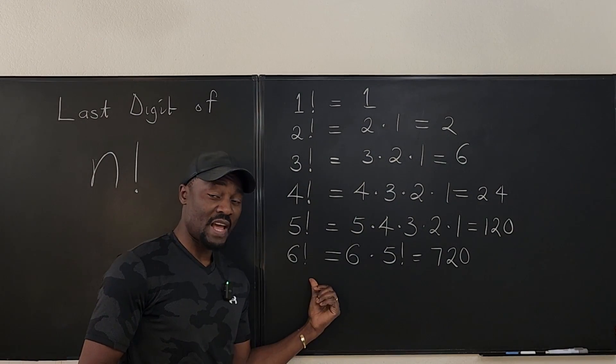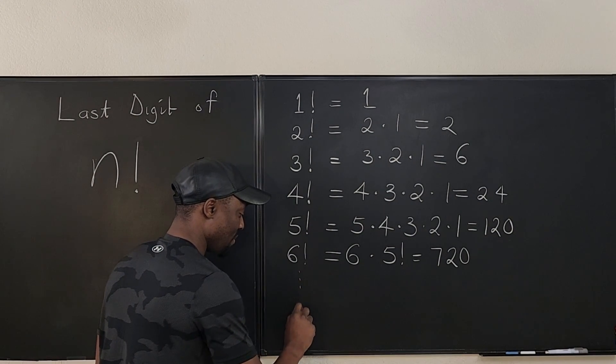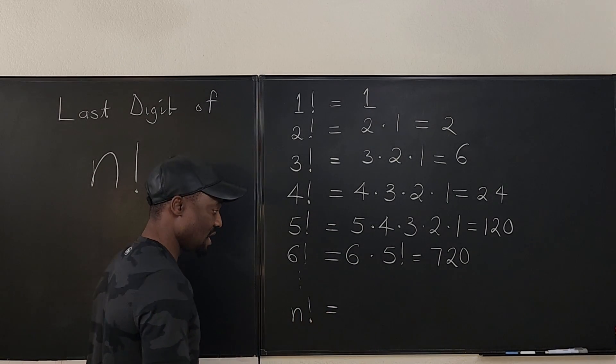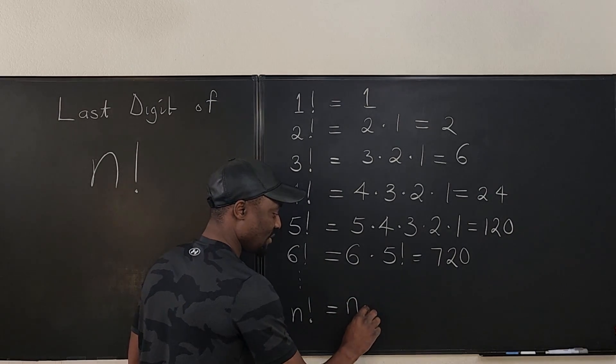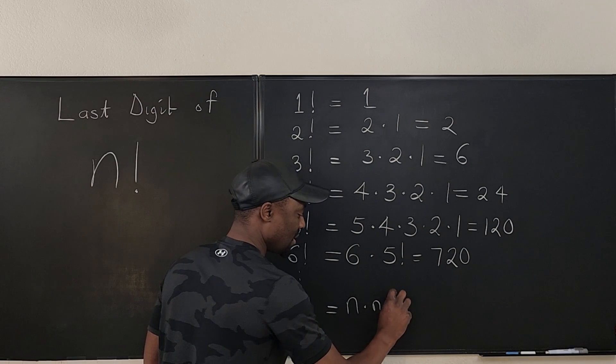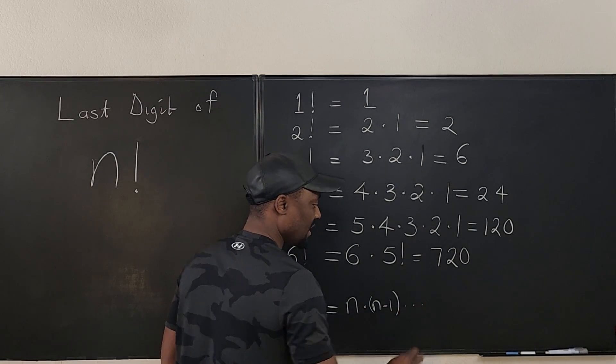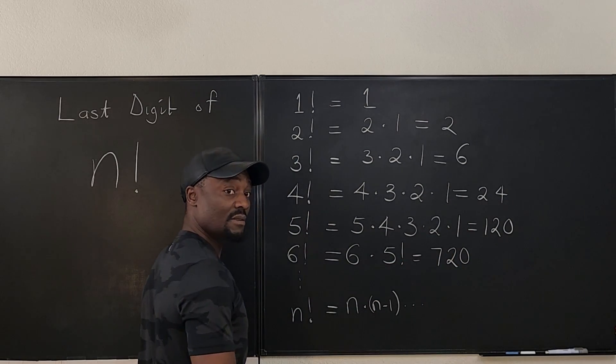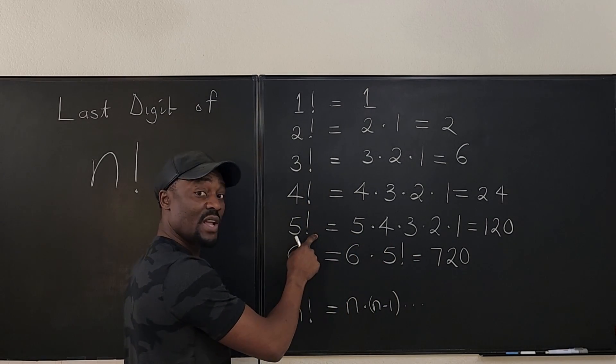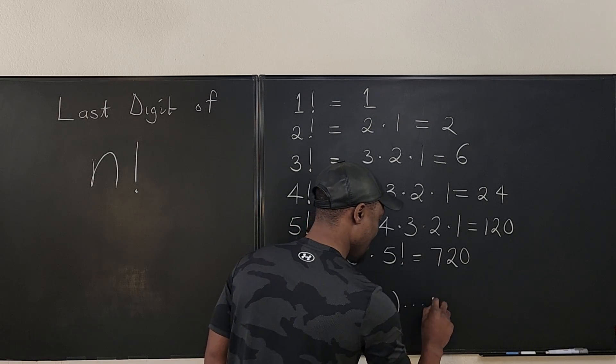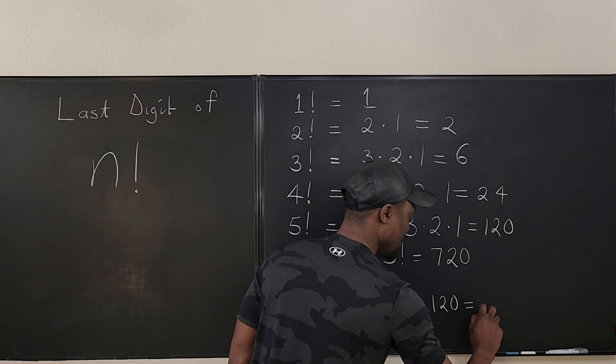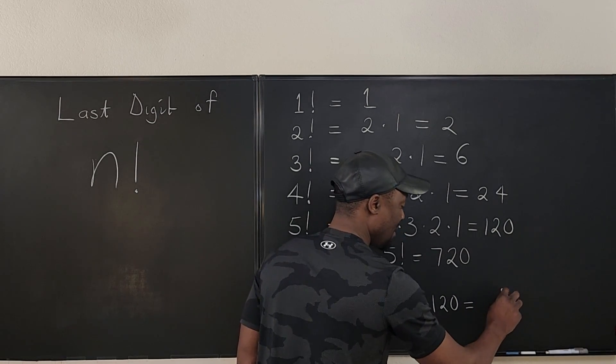So you will observe that if we keep going for whatever value of n, n factorial is going to be some n times some numbers, n minus one, it will ultimately multiply 120. Because we'll end up with this as long as n is greater than five. And our answer is going to be some giant number that ends in zero.